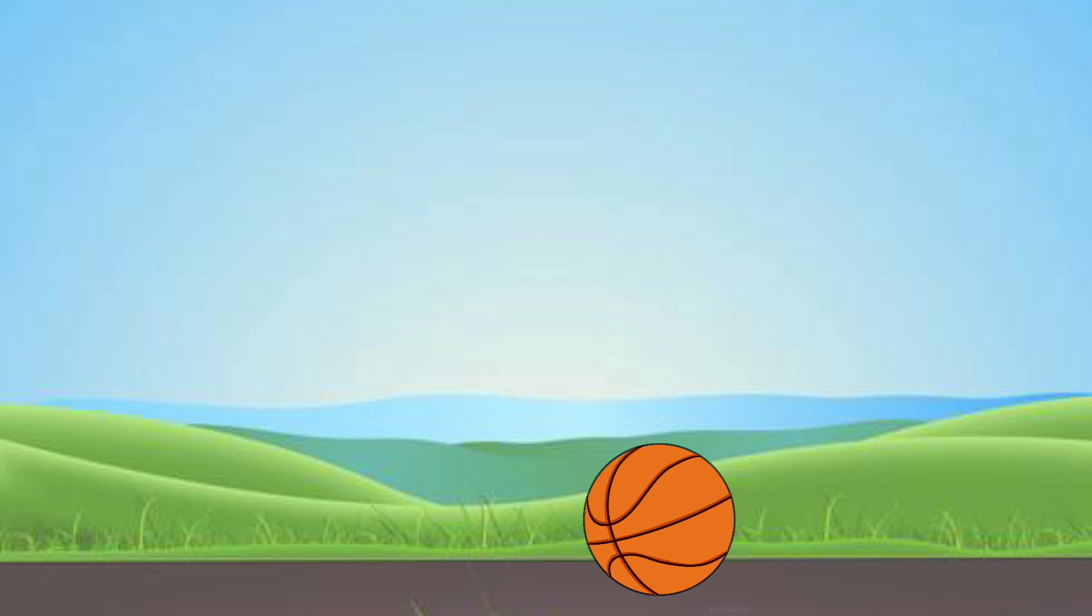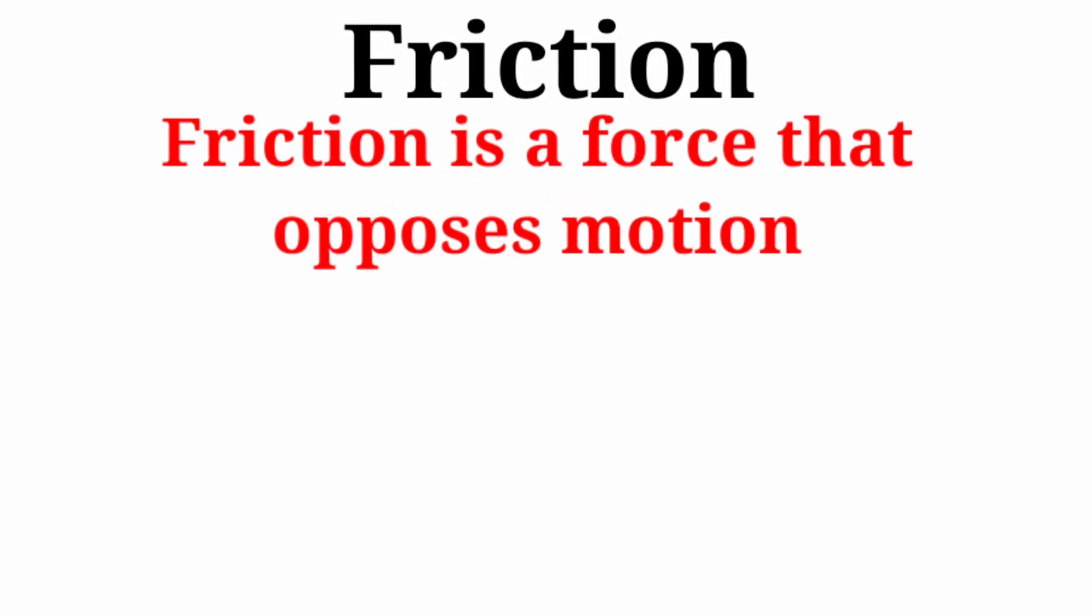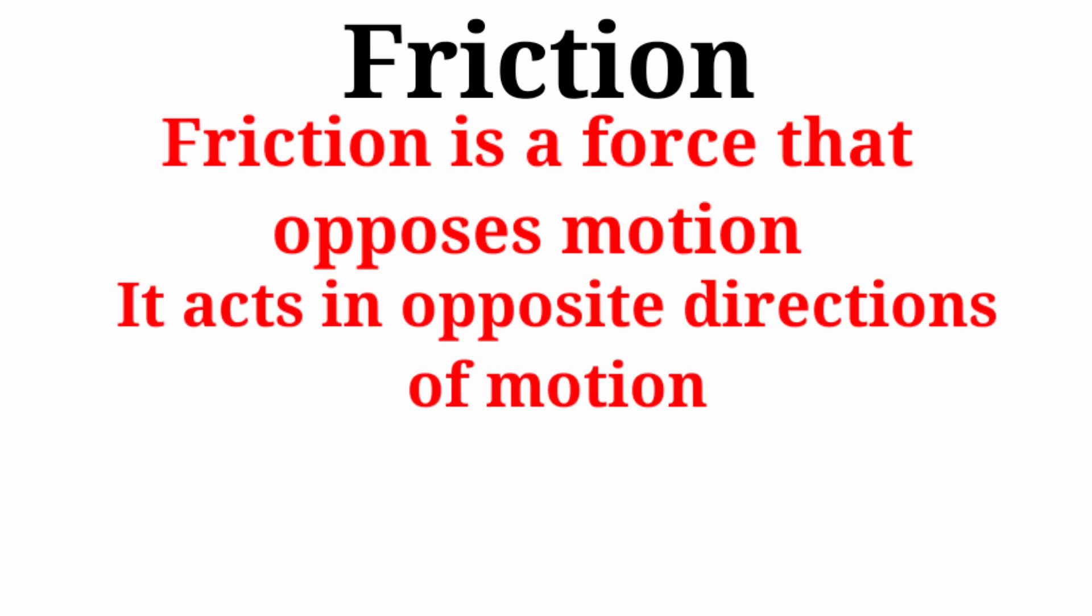So it means there is a force acting on the ball that opposes the motion of the ball. This force is known as friction. Friction is a force that opposes motion. It acts in the opposite direction to motion.